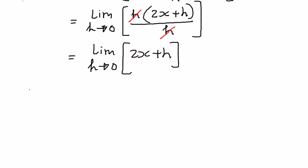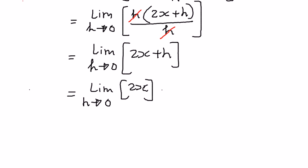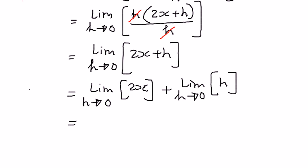Now we apply the limits to every one of the terms inside the limit. We can write it out as: limit of 2x as h approaches 0, plus limit of h as h approaches 0. The first part remains as 2x, and the second part goes to 0. So therefore we are left with 2x. This is our answer.